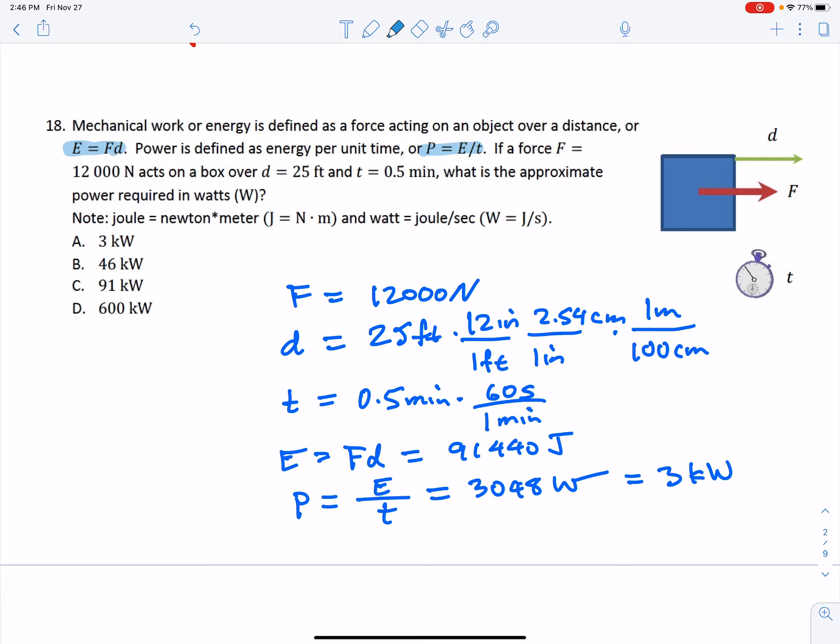So what we know is that there's a force applied of 12,000 newtons acting on a box. It acts over a distance of 25 feet and it takes a half a minute or 30 seconds.